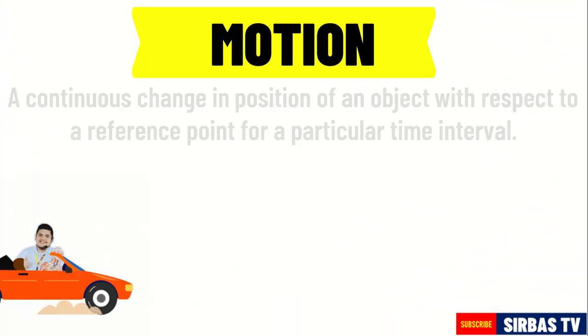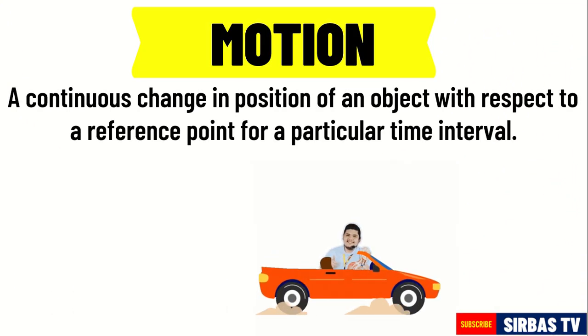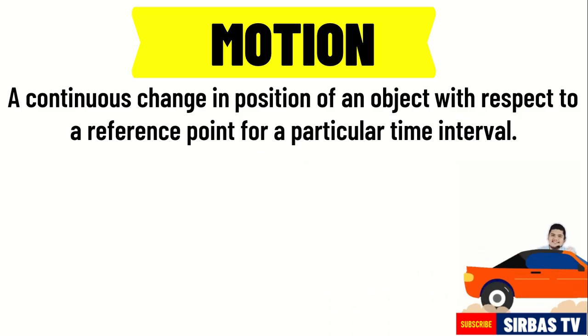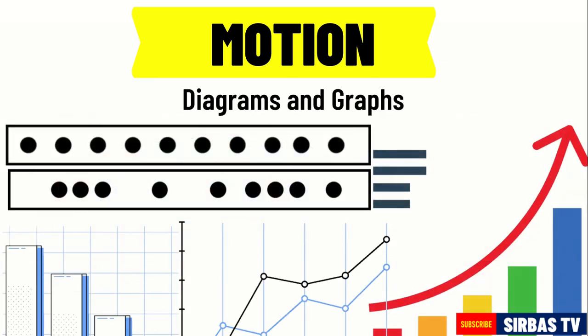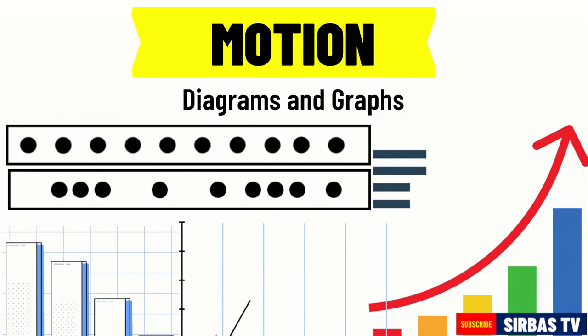Motion is defined as the continuous change in position of an object with respect to a reference point for a particular time interval. Describing motion is not only limited to using words and equations. Visual representations like diagrams and graphs are also useful tools in describing the motion of an object.